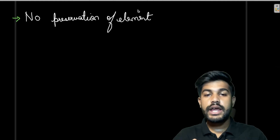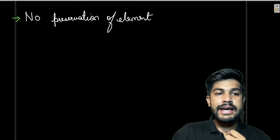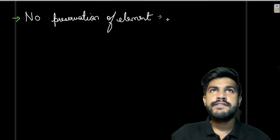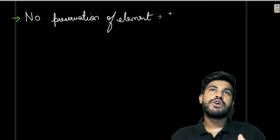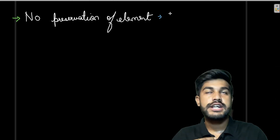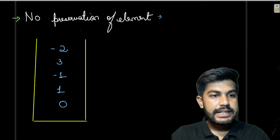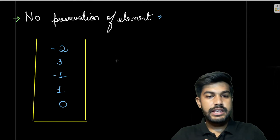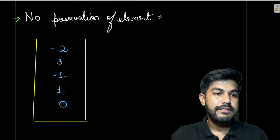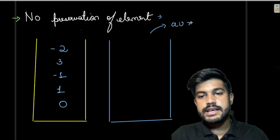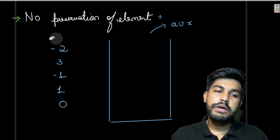Now let's discuss the first approach where there is no preservation of the original elements. The original elements won't be stored — only the required minimum values will be stored. We do this using an auxiliary stack. We start filling up that auxiliary stack while iterating through the given array from the back.